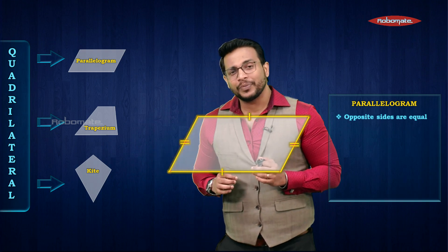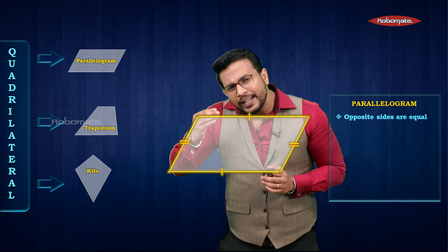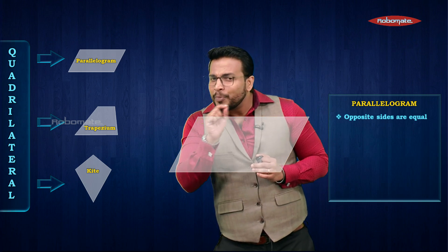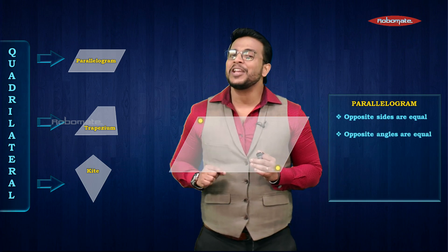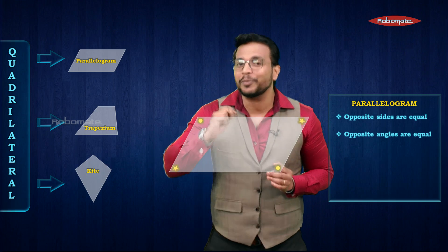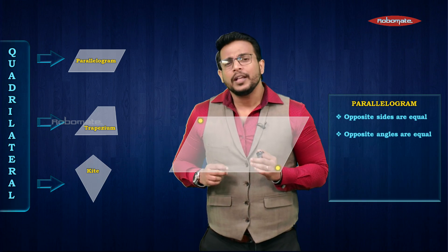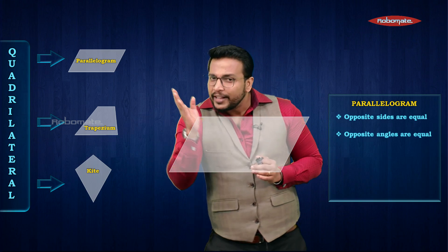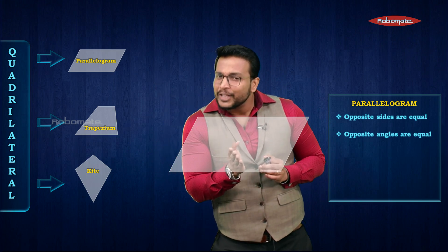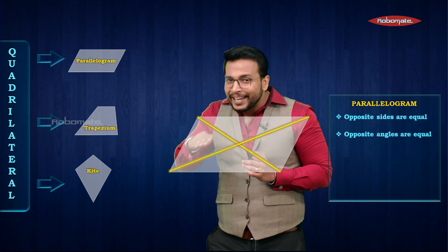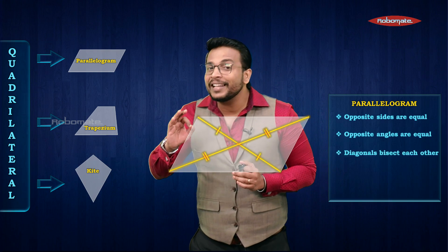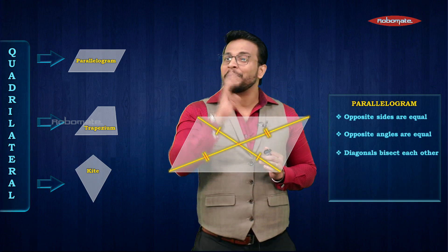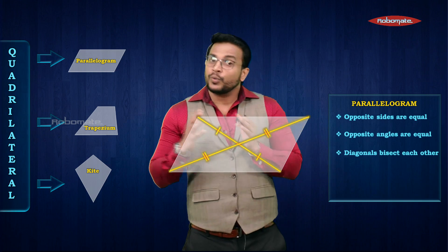The second property of a parallelogram: opposite angles are equal. There is one more property regarding the diagonals. Observe — we have one diagonal here and a second diagonal here. Diagonals bisect each other — that is the third property of a parallelogram.